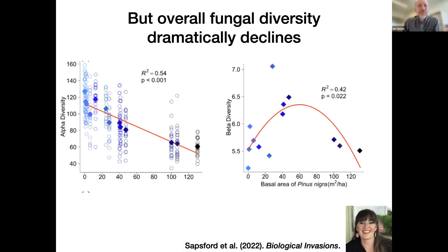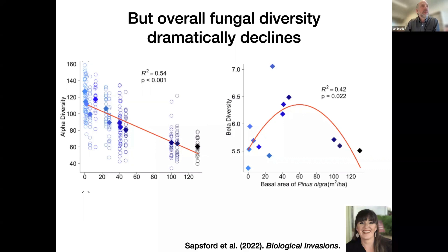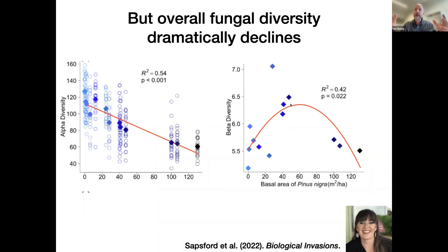But all is not good on the biodiversity front. Although there is that small increase in ectomycorrhizal diversity, at the same time we see a huge loss of overall fungal diversity — we're losing over half the fungal species at a local scale. That's alpha diversity. For beta diversity, measuring heterogeneity, we do see it becomes more heterogeneous initially because you've got isolated pines making things more variable, but that falls away pretty quickly. It looks like beta diversity may continue to decline as pine invasion proceeds, so the ecosystem is becoming very uniform and very low diversity.